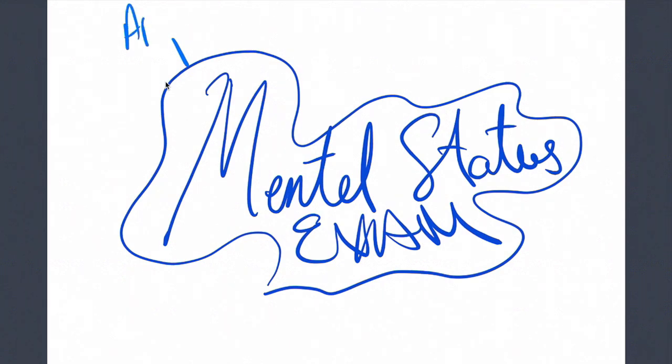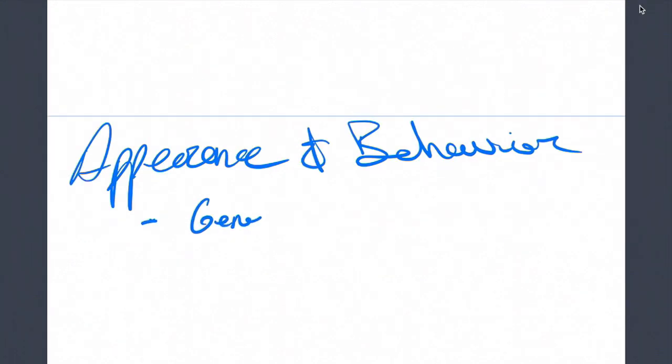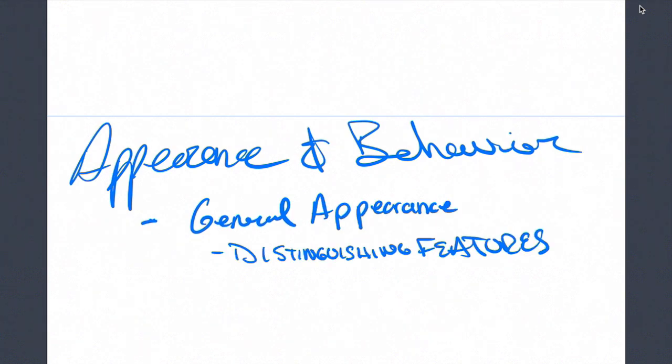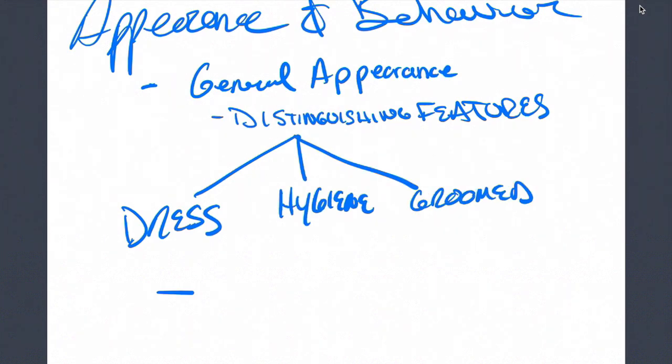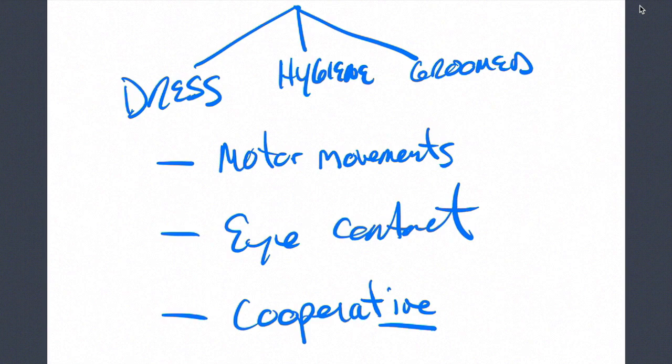First one is appearance and behavior. You want to focus on their general appearance and any kind of distinguishing features. If there's anything that stands out, like let's say someone hasn't showered in several months and they smell, then that's something that you want to report and document because it's a significant finding. You can be focused on things like what they're wearing. If it's freezing outside but they're wearing shorts and a t-shirt, that's not an appropriately dressed patient. How's their hygiene? Are they well groomed? You also want to pay attention to any kind of motor movements or motor tics. You can also observe their eye contact and whether or not they're cooperative.